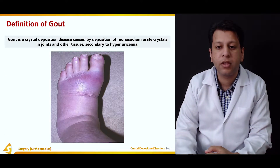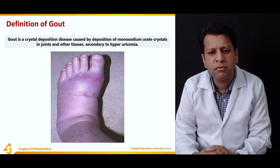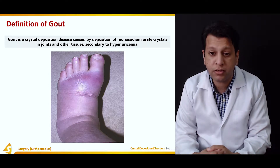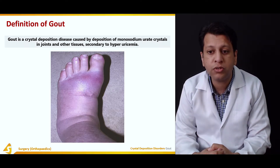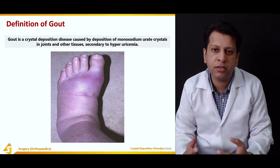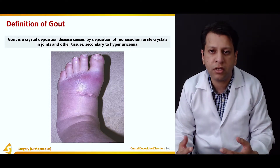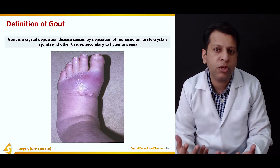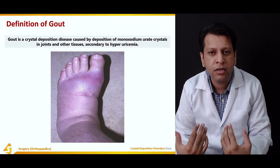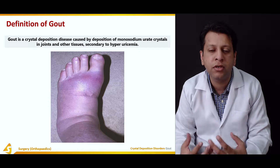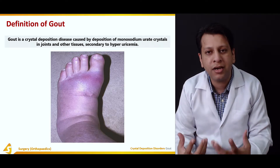Gout is a crystalline deposition disease caused by the deposition of monosodium urate crystals in joints and other tissues, secondary to hyperuricemia. In short, it is an increased amount of uric acid in our body. That uric acid cannot stay in the blood — it has to go somewhere, and if it is not excreted it goes into the joints. Once monosodium urate crystal deposition starts, this results in arthritis of the joints.